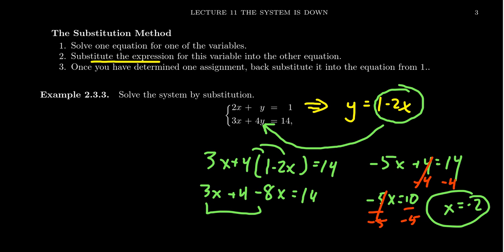This gives us a partial solution because we now know the x coordinate. What do we do to find the y coordinate? Well, once you've determined the assignment of one of the variables, you're going to substitute this back into the other expression.